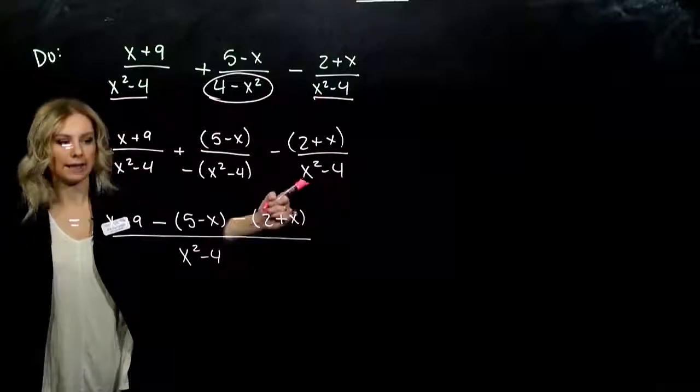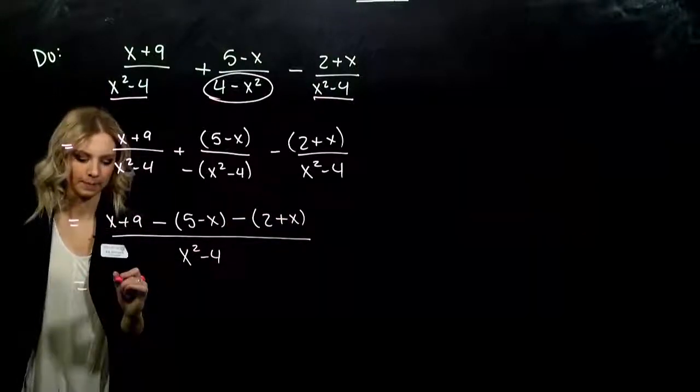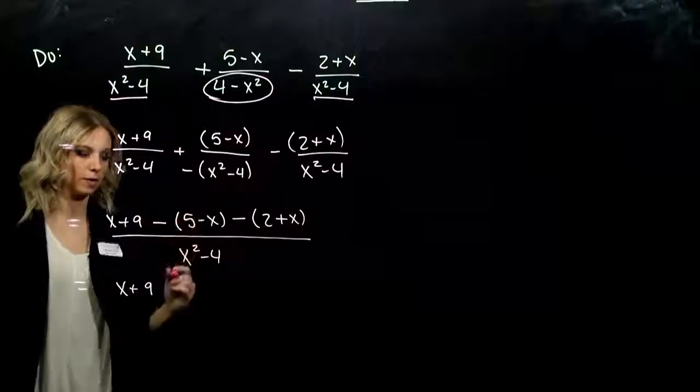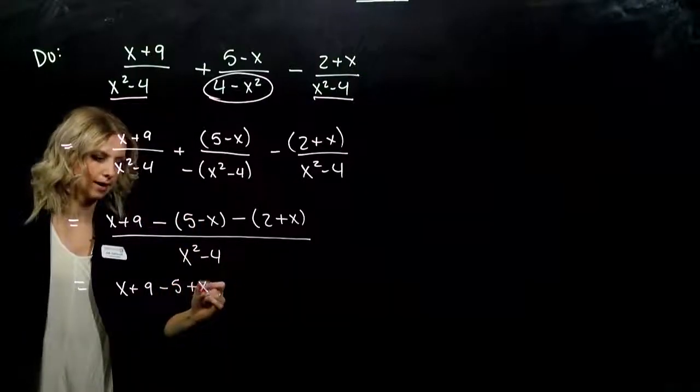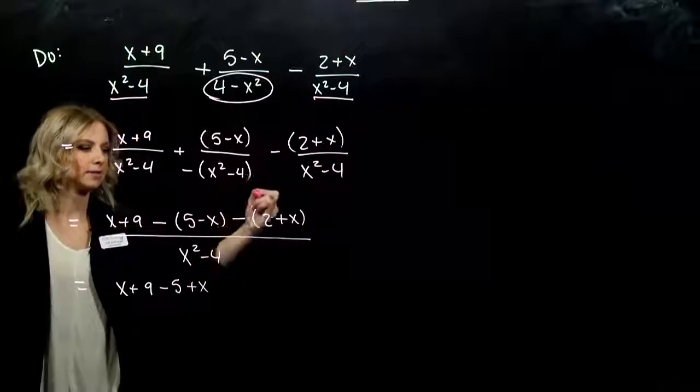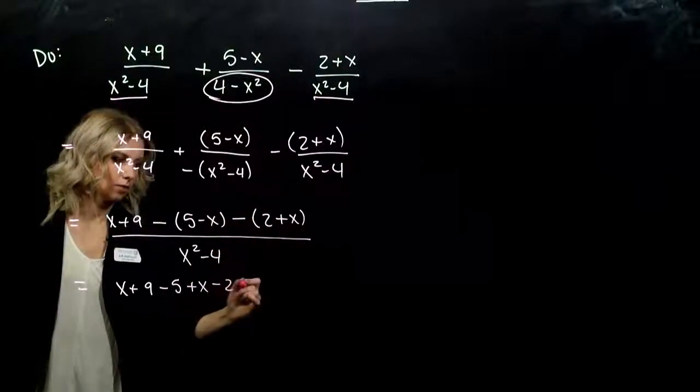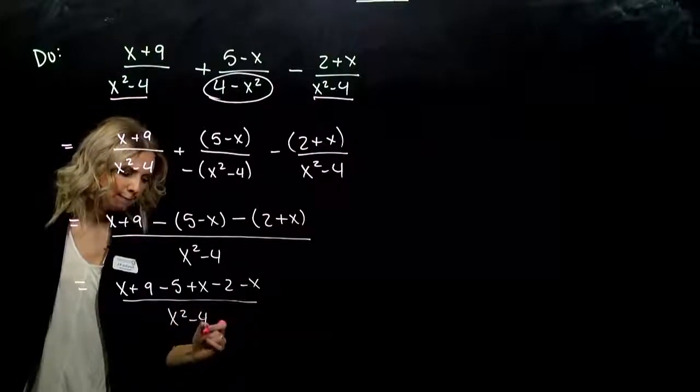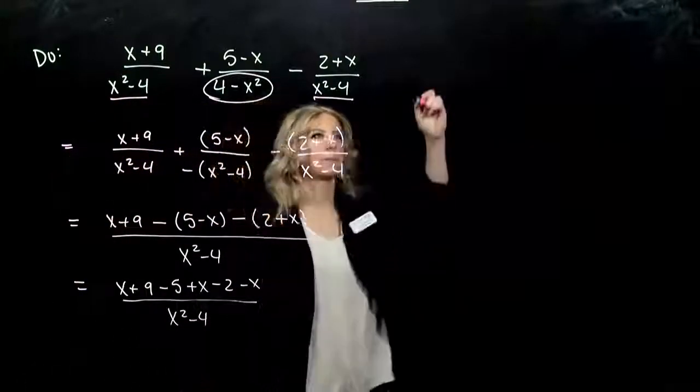Let's work at simplifying the top. What do we have up there? Distributing to get rid of the parentheses, I've got negative 5 plus x. And distributing in the second one, negative 2 minus x. All over our LCD.